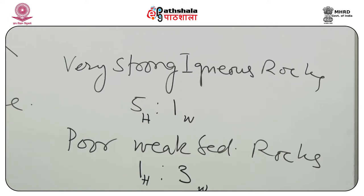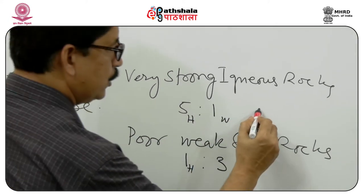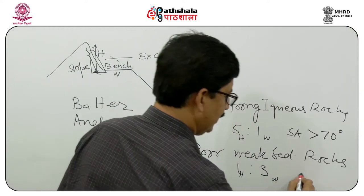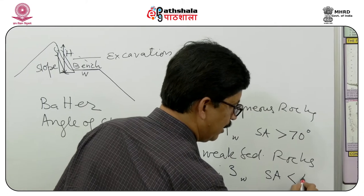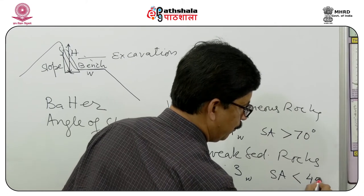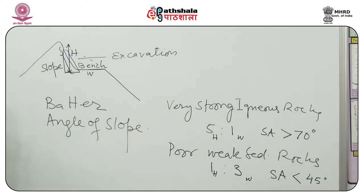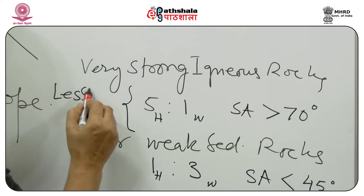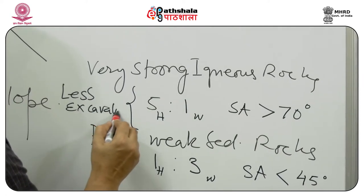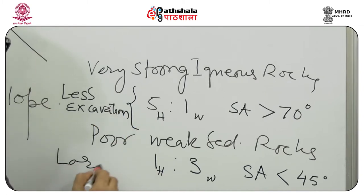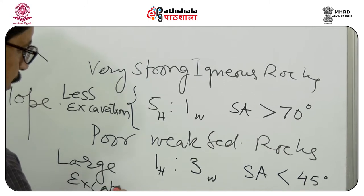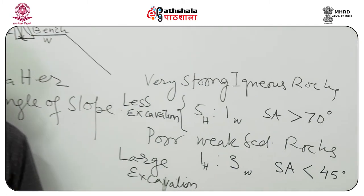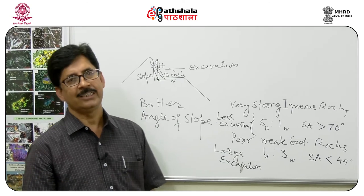The angle of slope is important: if you have strong rocks, the slope angle may be greater than 70 degrees, but if you have weak rocks, the slope angle should be less than 45 degrees, and sometimes even less than 30 degrees. For weak rocks, you have to go for very large excavation, whereas for strong rocks less excavation is needed.